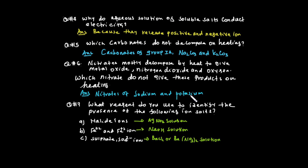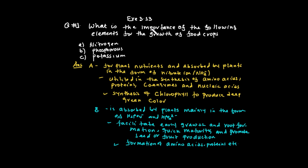Group 1 nitrates such as sodium nitrate do not give metal oxide, nitrogen dioxide, and oxygen in the same way as other nitrates. Question 7: What reagent do you use to identify the presence of a particular iron salt? We use silver nitrate solution, sodium hydroxide solution for iron(II) and iron(III), and barium chloride or barium nitrate solution for sulfate identification.